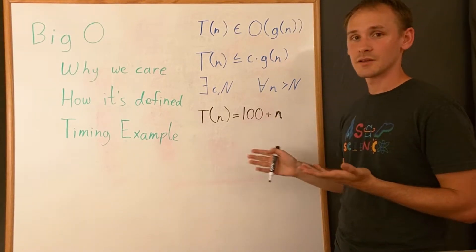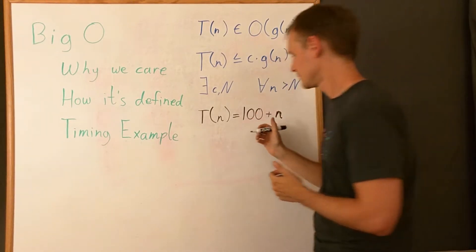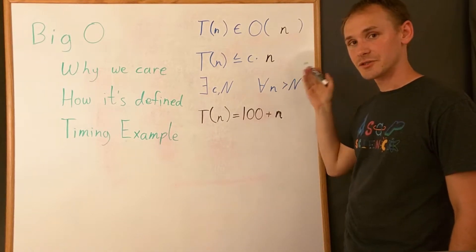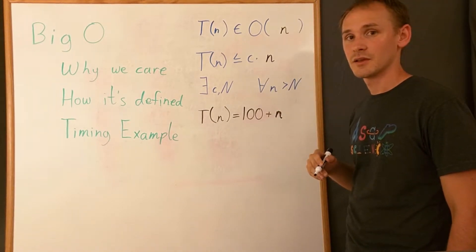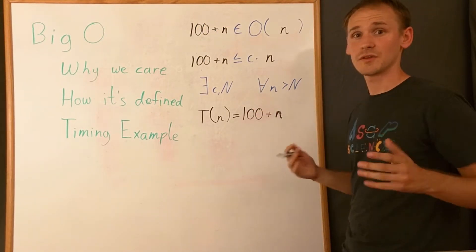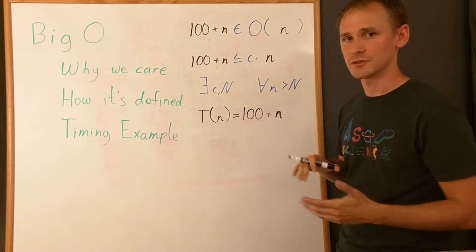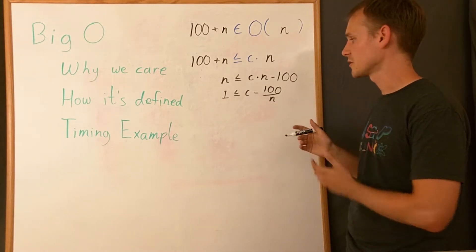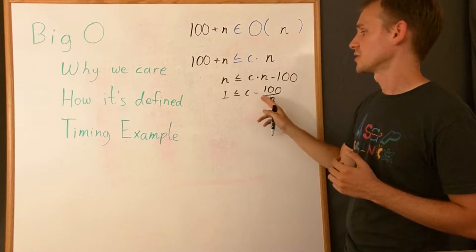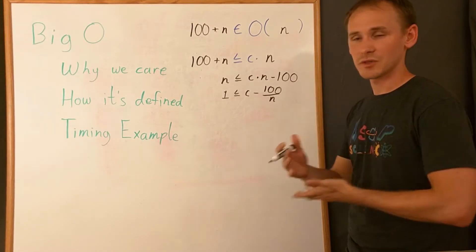So in that scenario, T(n) is just 100 plus n. And we want to prove that T(n) is O(n). Based on our definition here, we can actually start filling some stuff in. First we'll replace g(n) with n, and then we'll replace T(n) with 100 plus n. So now the tricky part is actually simplifying this and proving that it's true. Usually what you want to do is try to get all of the n terms on one side or other of the equation. After getting all of the n's to one side of the equation, it becomes pretty obvious that 1 is going to be less than or equal to some constant that we get to choose minus 100 over n. Because as n gets bigger, this term of 100 over n is only going to get smaller.